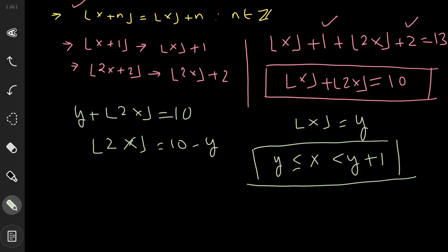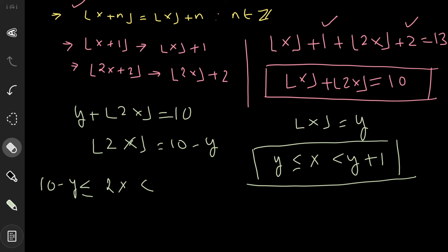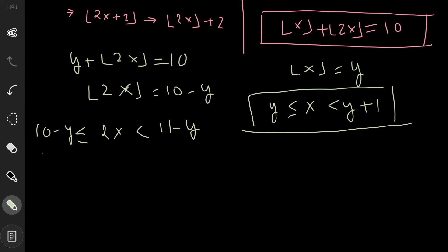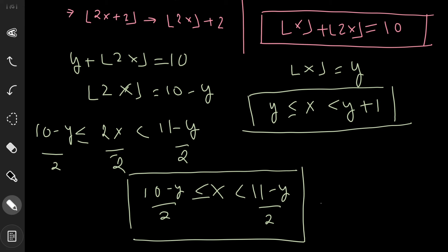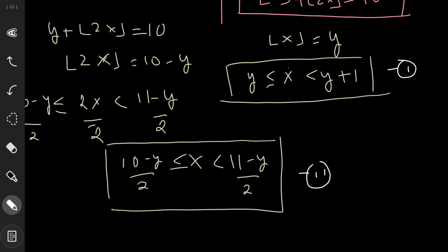Since floor(2x) = 10 − y, by the floor function definition, 2x satisfies: 10 − y ≤ 2x < 11 − y. Dividing through by 2 gives: (10 − y)/2 ≤ x < (11 − y)/2. This is our second inequality. The first inequality from floor(x) = y was: y ≤ x < y + 1.